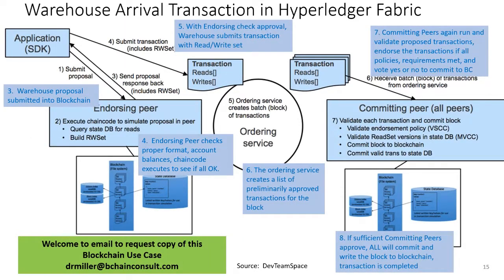With permissions and certificate authority confirmed, the warehouse's proposal gets into the blockchain to start processing — that's step three. The transaction request submits its proposed transaction to an endorsing peer node, typically one run by your company. The very first thing a processing node does is pretend-execute or test the proposal to see if it makes sense on the blockchain — step four. If the query has you transfer funds you don't have, or invokes chain code smart contracts that don't execute correctly, the transaction request is immediately rejected.